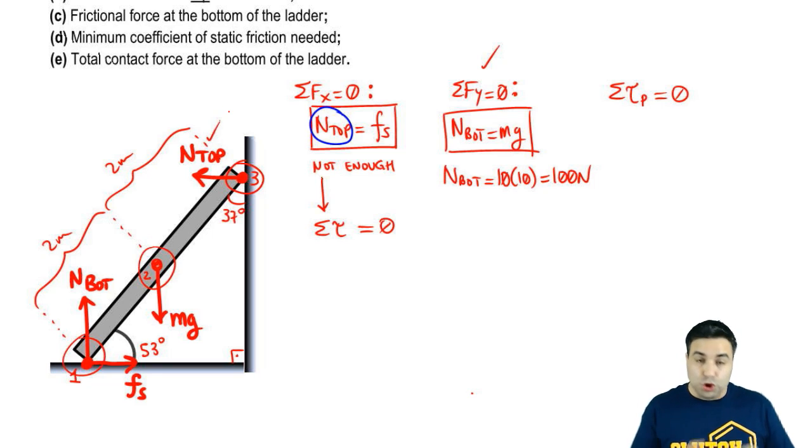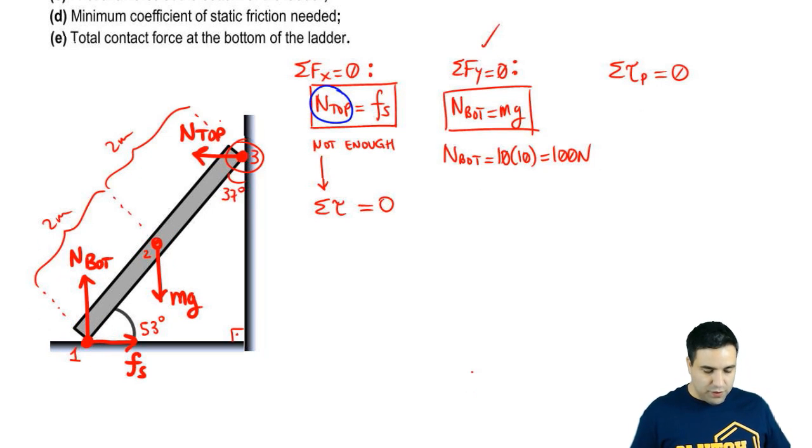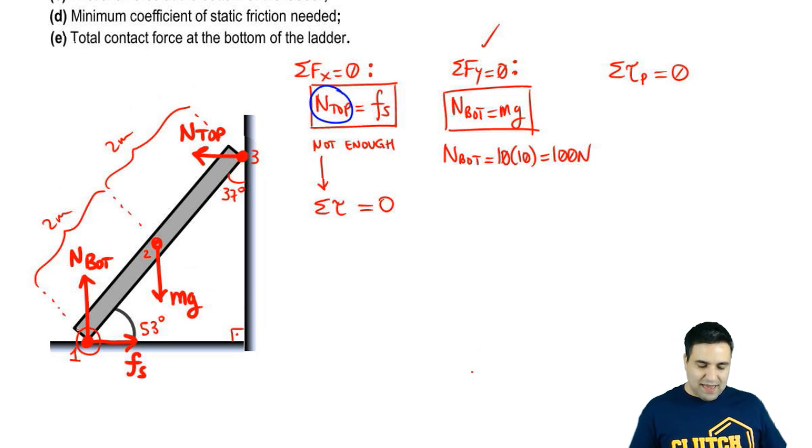So normal at the top to find that I'm going to have to write a torque equation because this here is not enough. So we're going to write a torque equation. And if you want normal at the top, you want to write a torque equation with your axis being somewhere else. The reason being, you want your n top to show up on the equation. If you put the axis of rotation here, then there will be no torque due to normal at the top, and it won't be part of the equation. So we're going to carefully select our axis to be one of the other two points. I'm going to pick the bottom here. And I'm going to pick that point because that point is actually the best of the two to pick.